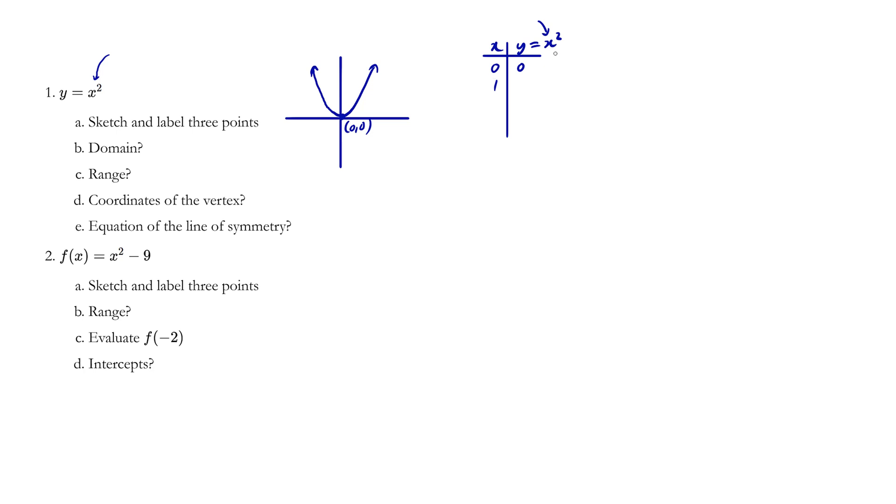Now what about 1? 1 squared is 1. It's going to be here, 1, 1. And what about 2? 2 squared is 4, so this would be 2, 4.